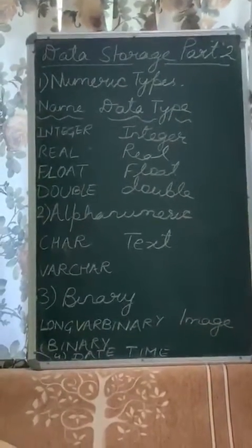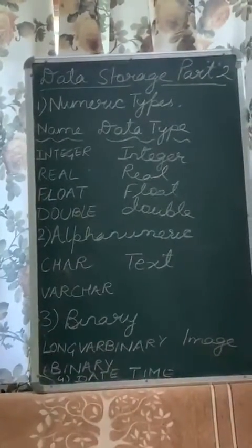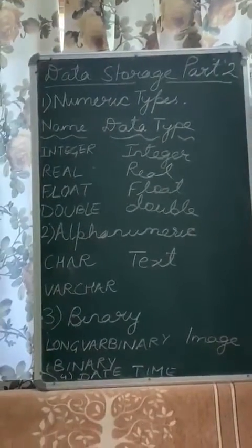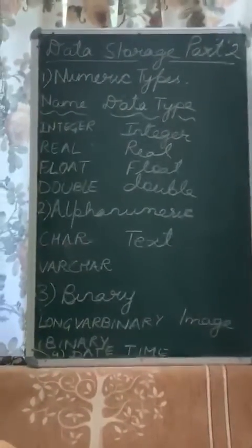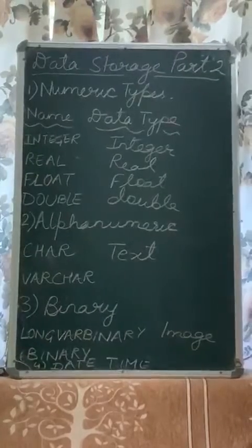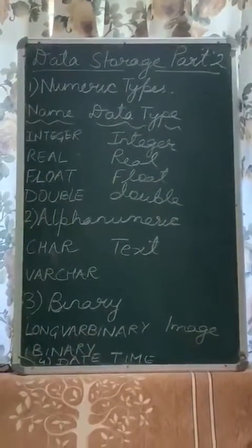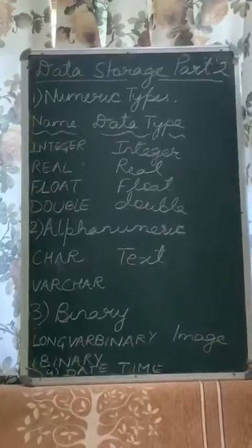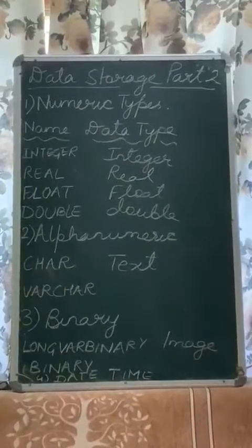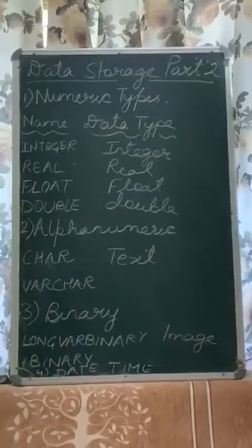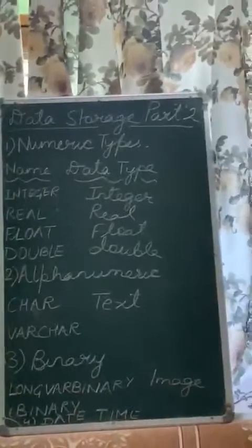To conclude: numeric type is used for storing numeric data like marks or currency values; alphanumeric is used for storing data that is a combination of alphabets and numbers; binary is used for storing photos and videos; date/time is used for storing date and time values; and other data types are used for storing Java objects. That is all for today — thank you and have a nice day.